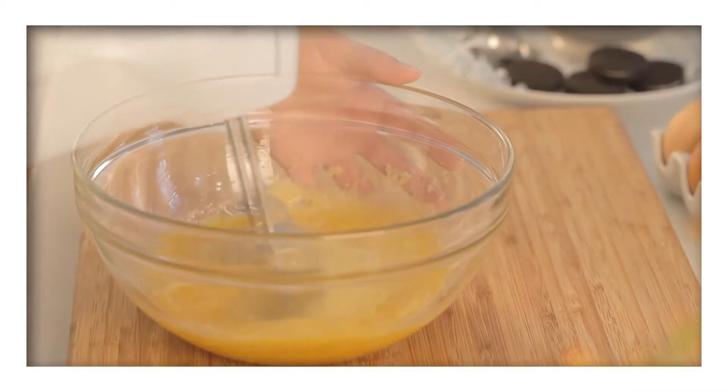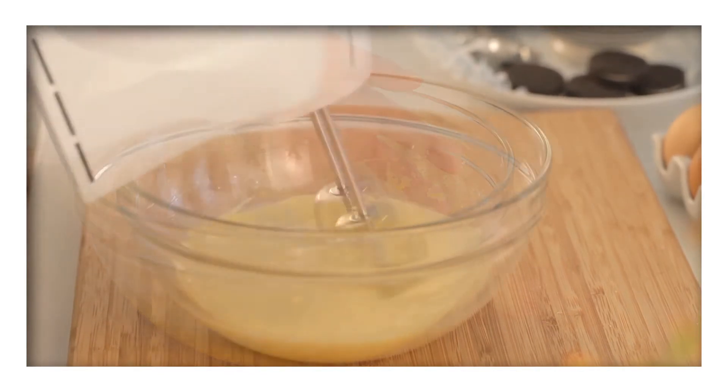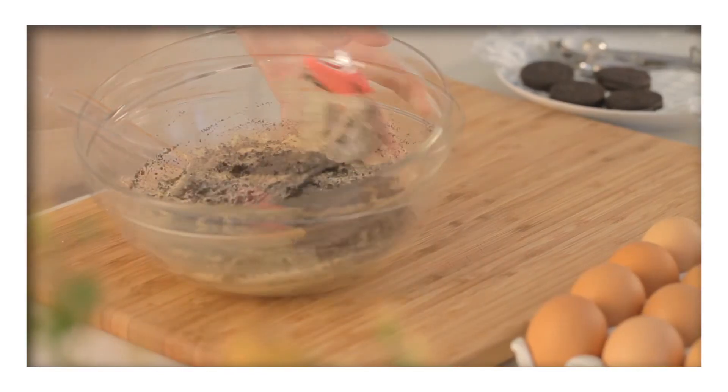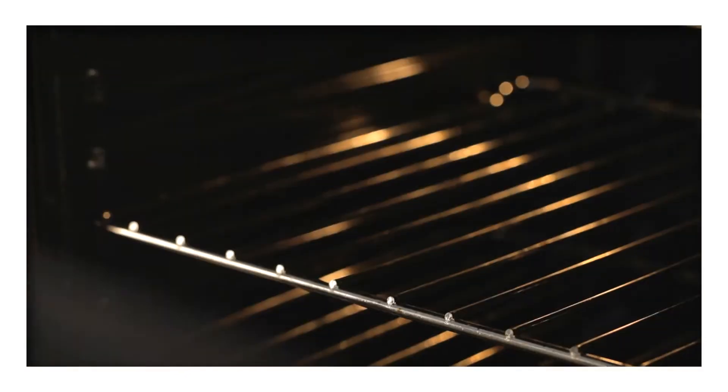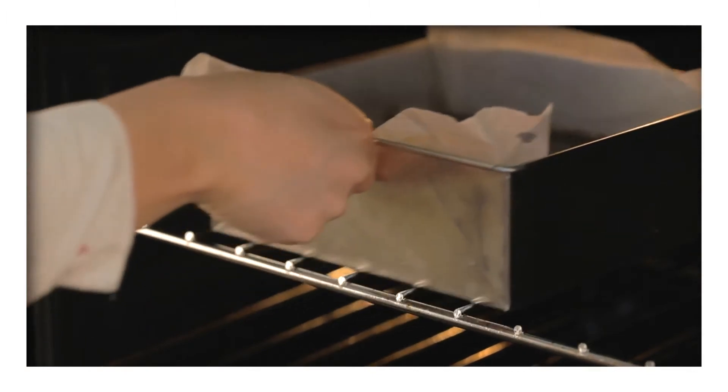Using an electric beater, beat the mixture until it's combined, then fold in the crushed Oreos. Once the base is cooked, spoon the topping over it before placing it back into the oven for a further 20 minutes to bake.